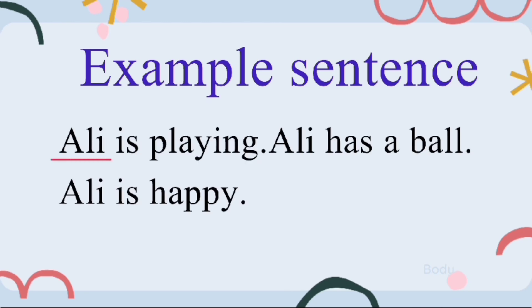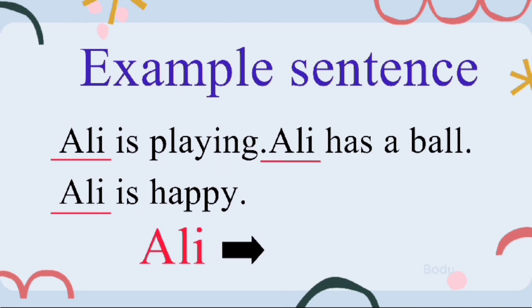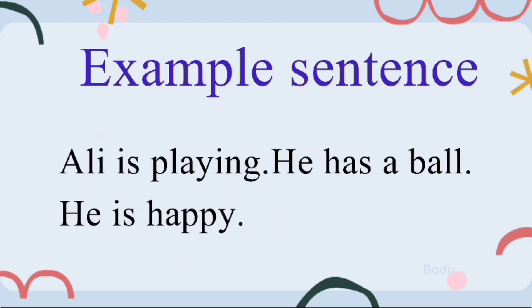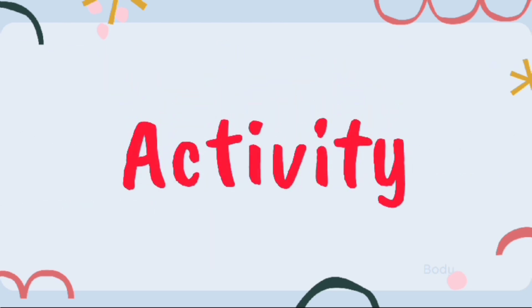Let's take an example to make it more clear. If I say: Ali is playing, Ali has a ball, Ali is happy — instead of repeating the name Ali again and again, you can replace it with the pronoun 'he.' So: Ali is playing, he has a ball, he is happy. I hope this is clear.